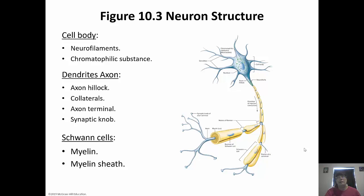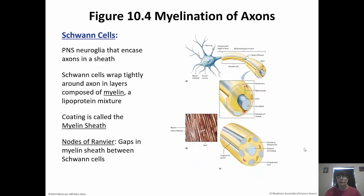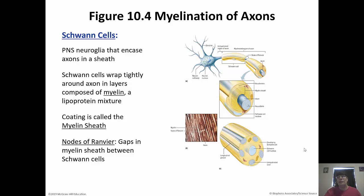You can see Schwann cells in the picture. They produce myelin to form the myelin sheath, and they are part of the peripheral nervous system. They encase the axon kind of like a jelly roll — multiple rolls surrounding the axon. The myelin is composed of a lipoprotein mixture, mostly lipids, which makes myelinated axons appear white. Each Schwann cell has a gap between two cells called the node of Ranvier. When an impulse is being transmitted down the axon, it can jump from node to node, making transmission much faster.